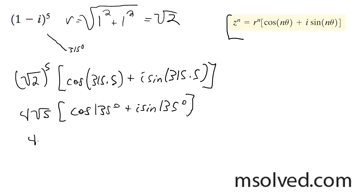So we get 4, I have 5 there, it should be 2. 4 root 2 times cosine 135 is equal to negative root 2 over 2.